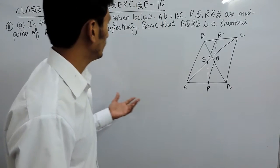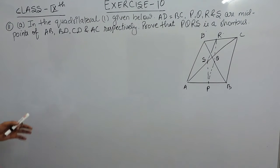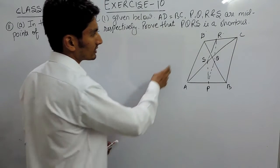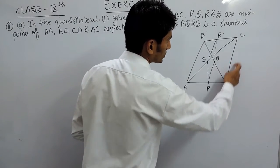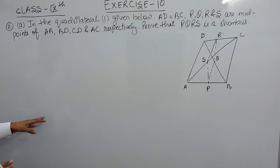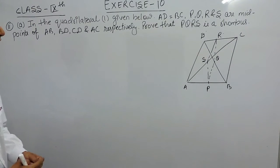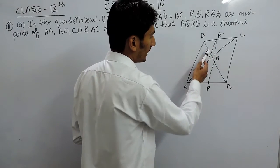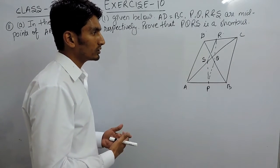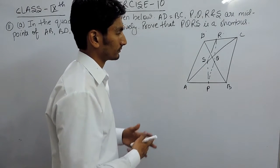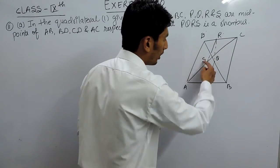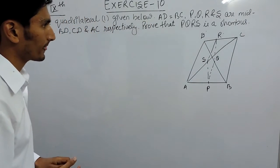Hello everyone. In this video we are going to solve the first part of question number 11. In this question you are given a quadrilateral ABCD where AD is equal to BC, and P, Q, R, S are given as the midpoints of AB, BD, CD and AC respectively. We have to prove that PQRS is a rhombus. A rhombus is a four-sided figure whose all sides are equal.